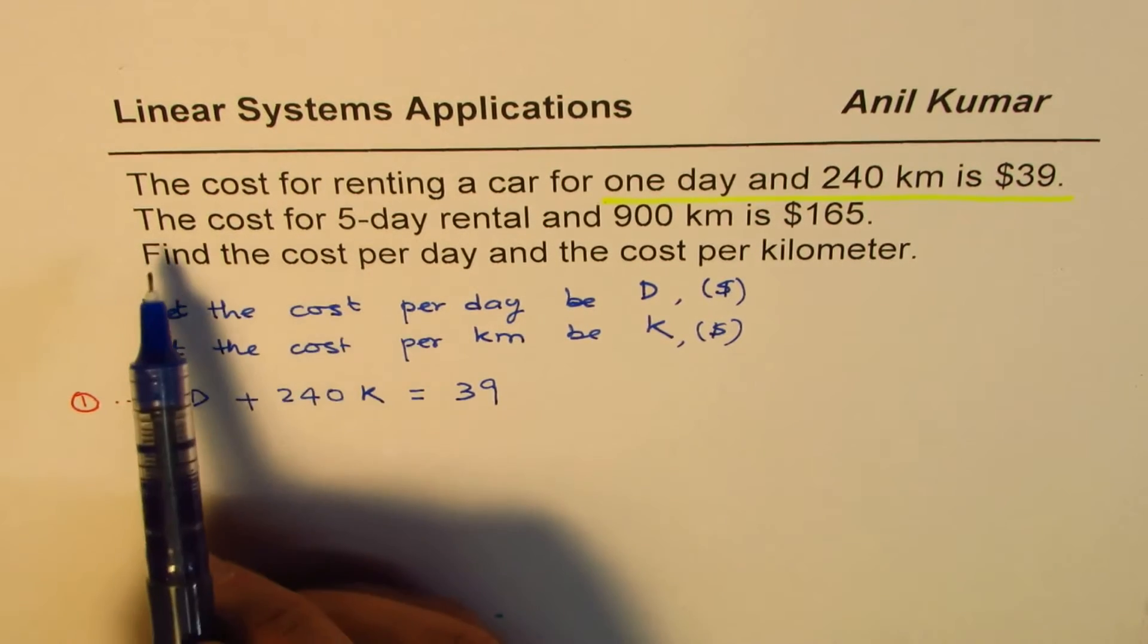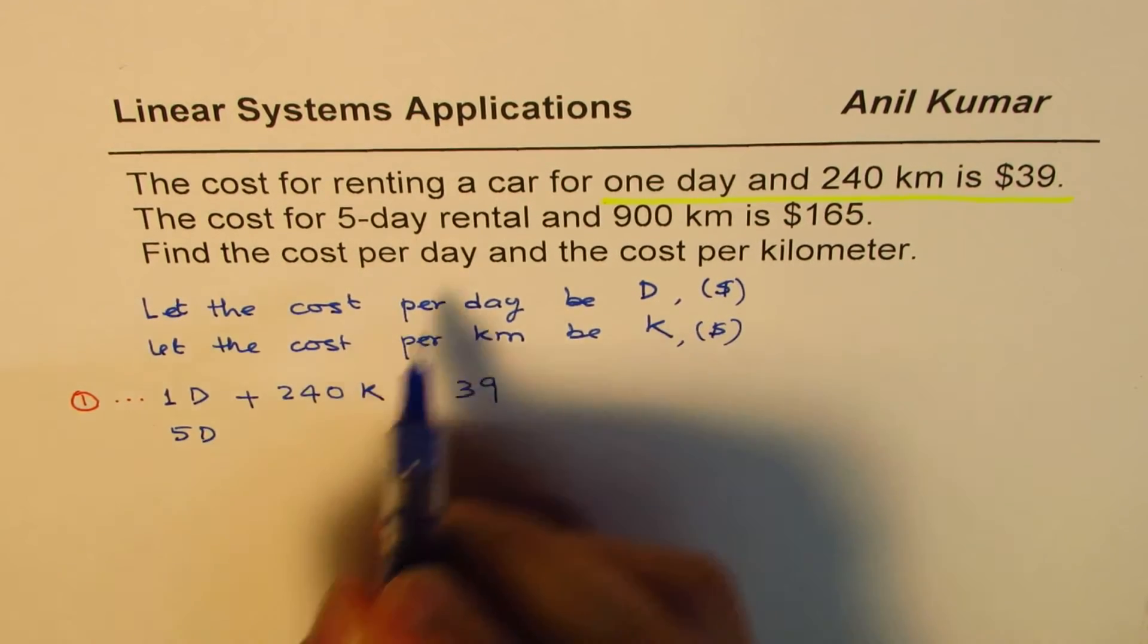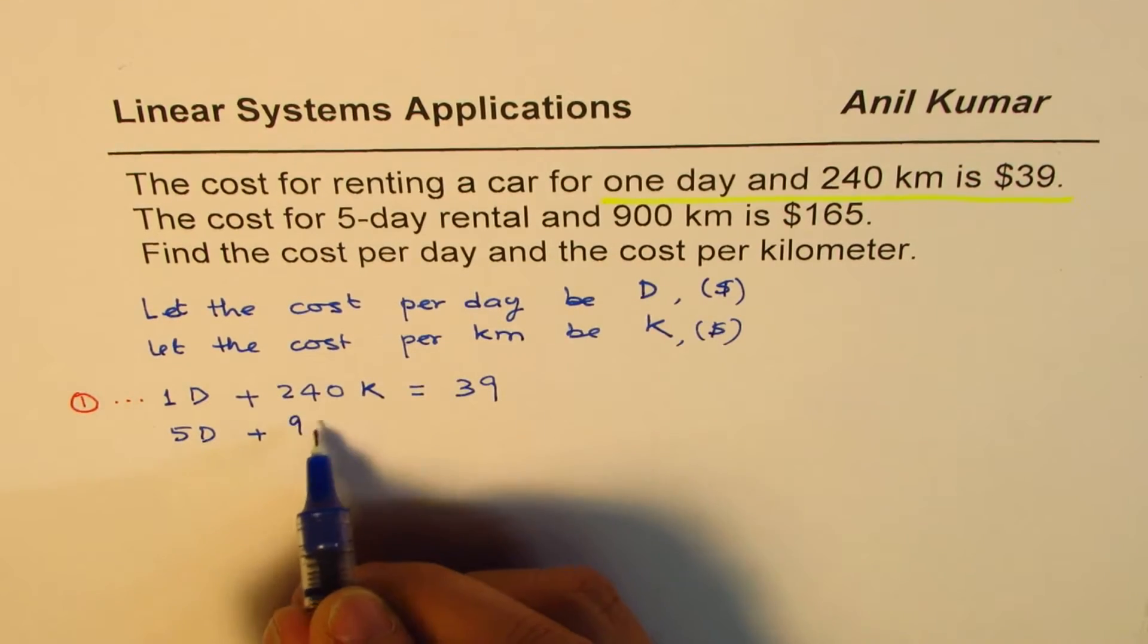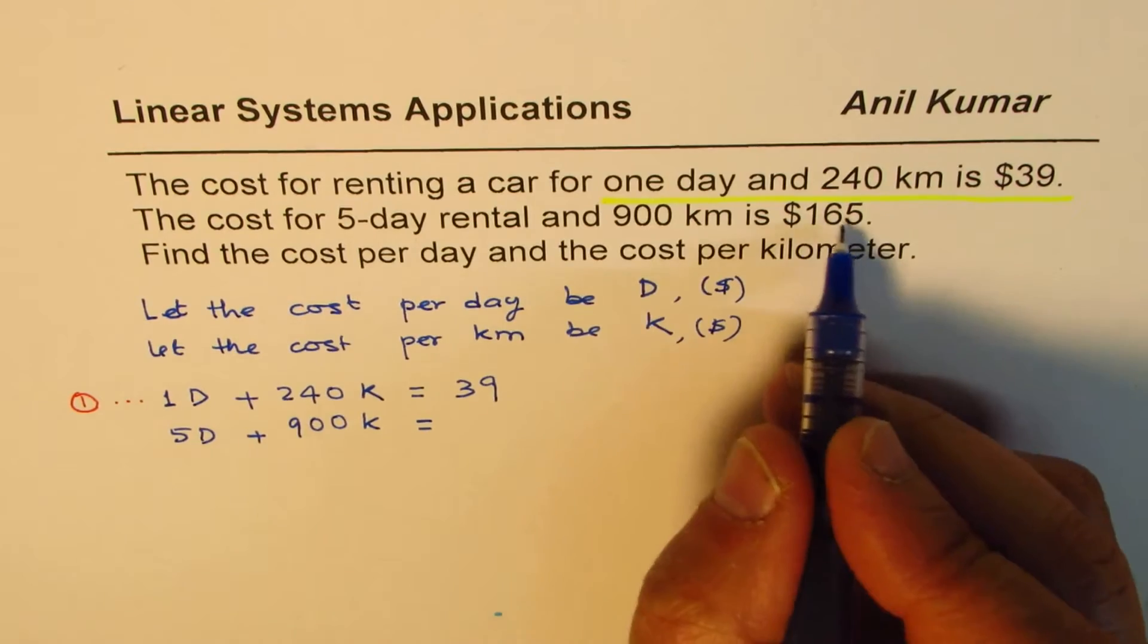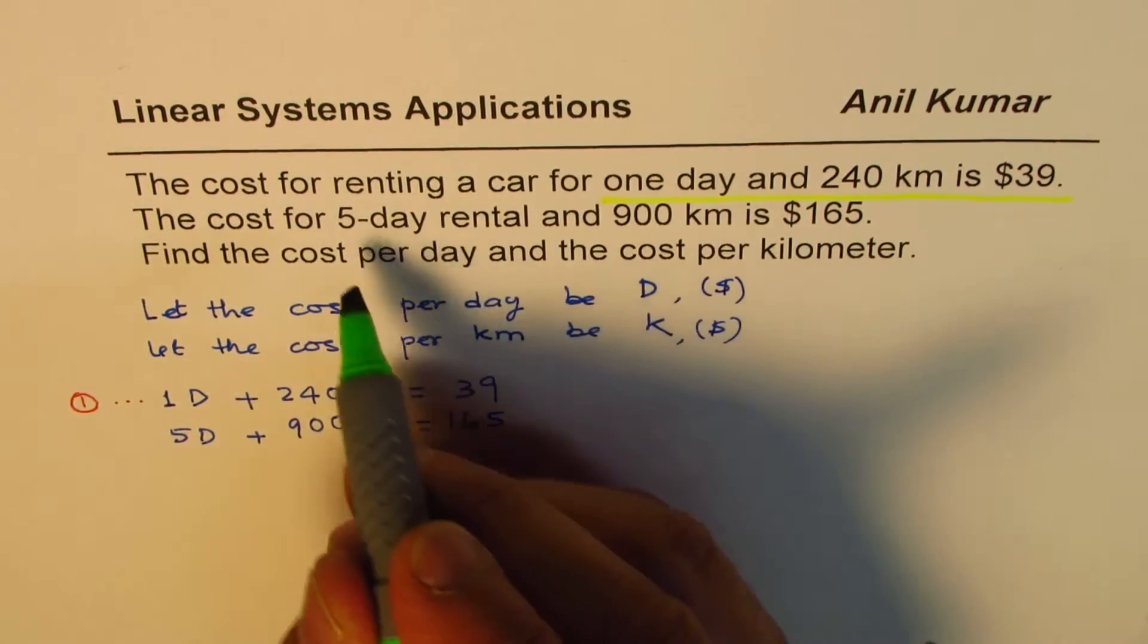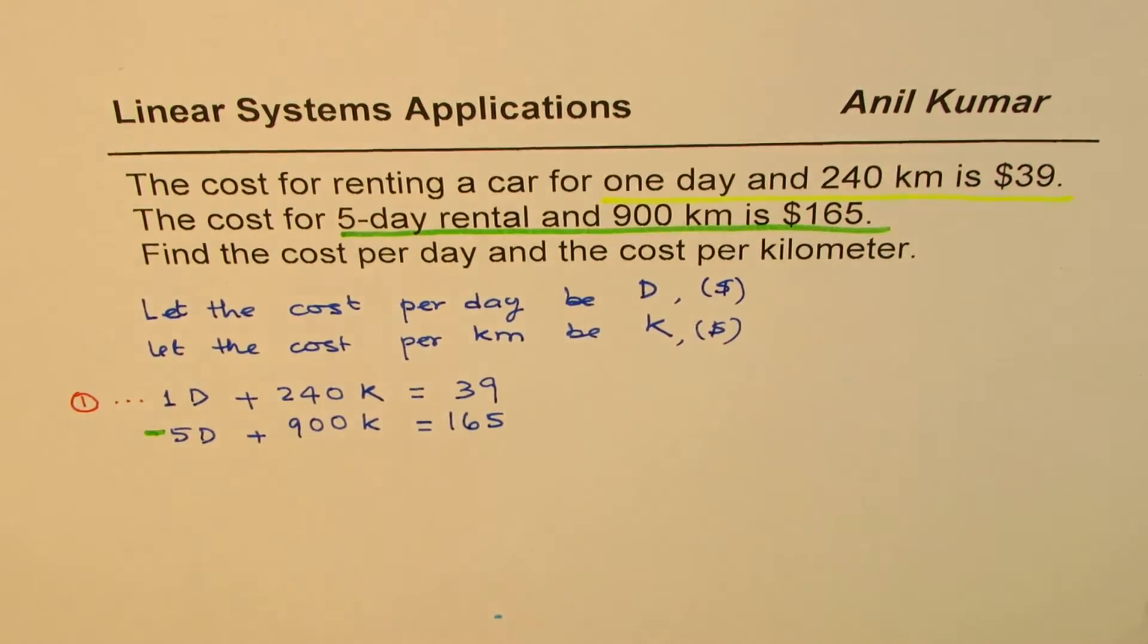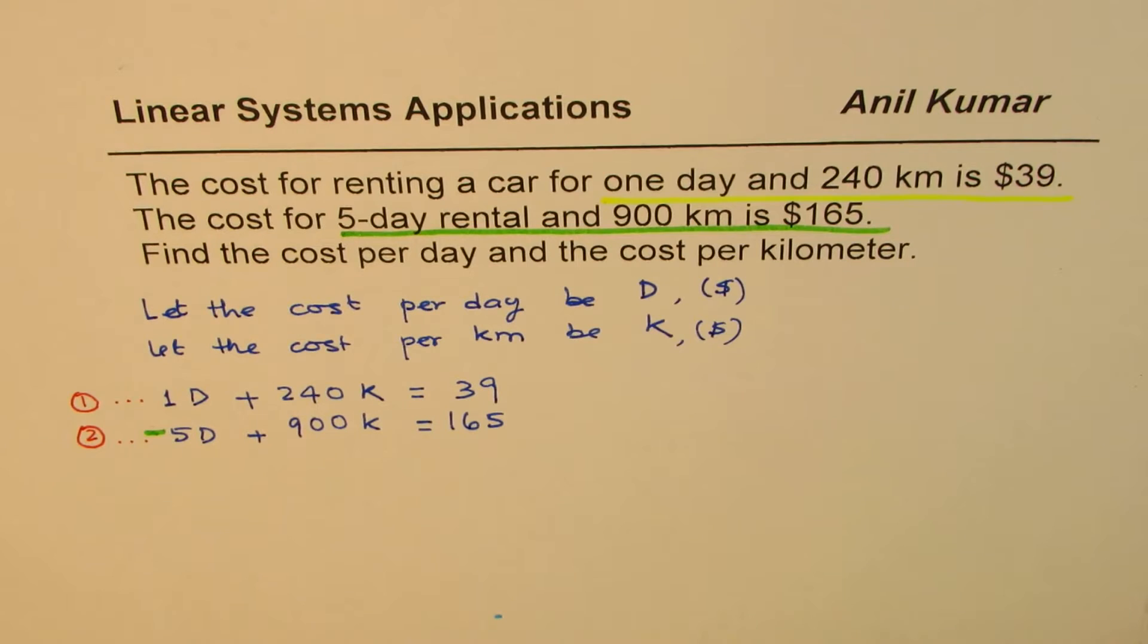Second one: the cost for five-day rental means 5D, and means plus 900 kilometers, 900K, is 165. That is the second statement, which says five-day rental, and we get this one. The second statement, we'll give it equation number two. Giving equation numbers help us to communicate. That's very important.